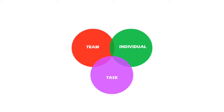We've adapted John Adair's diagram, with his verbal agreement, for helmsmanship. A leadership expert felt that Adair's diagram did not highlight the needs of the leader, so we've added another circle to show that the leader also has needs. For example, the leader may be a first-time manager and inexperienced, which presents a different set of needs from a leader with many years' experience.